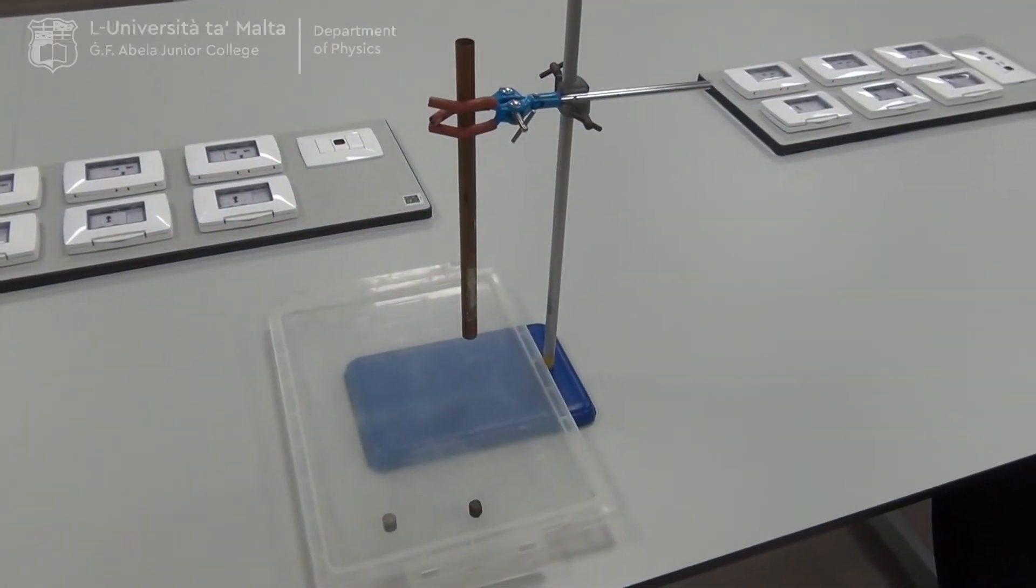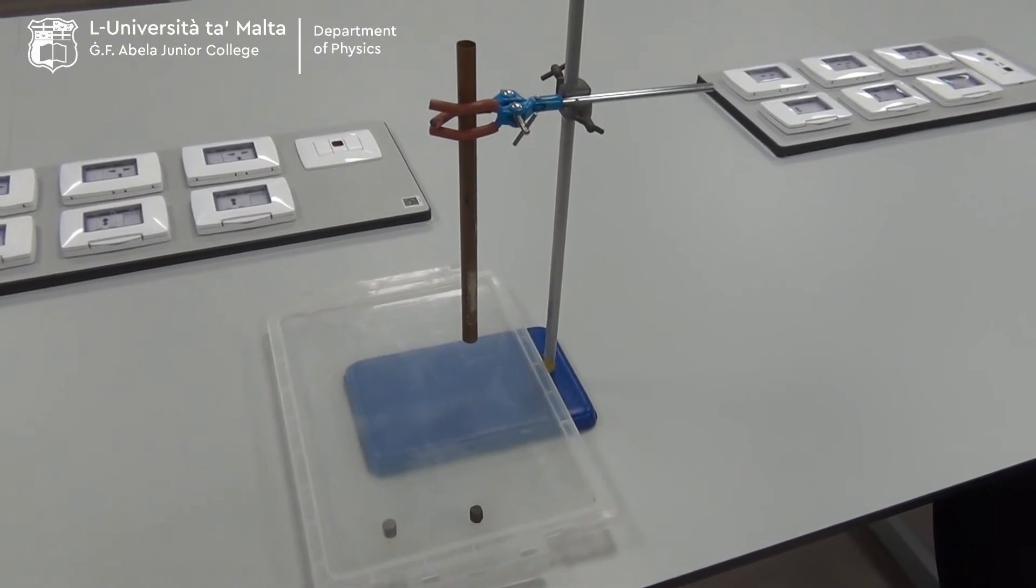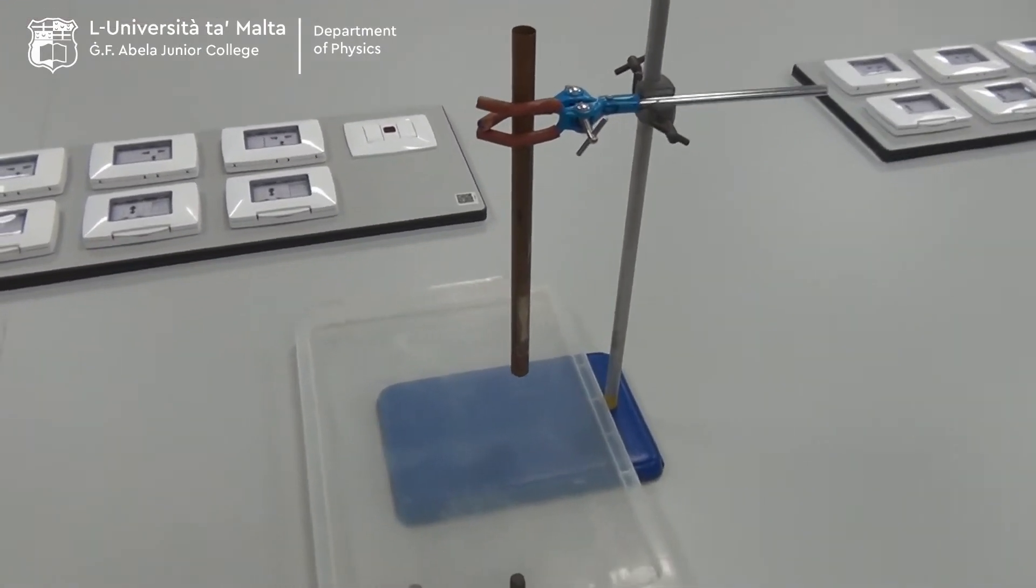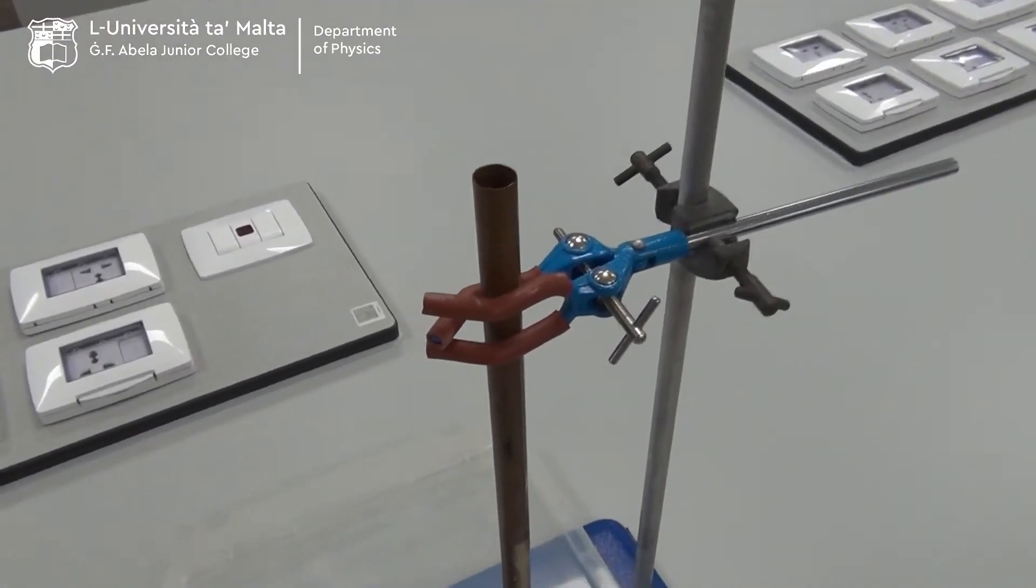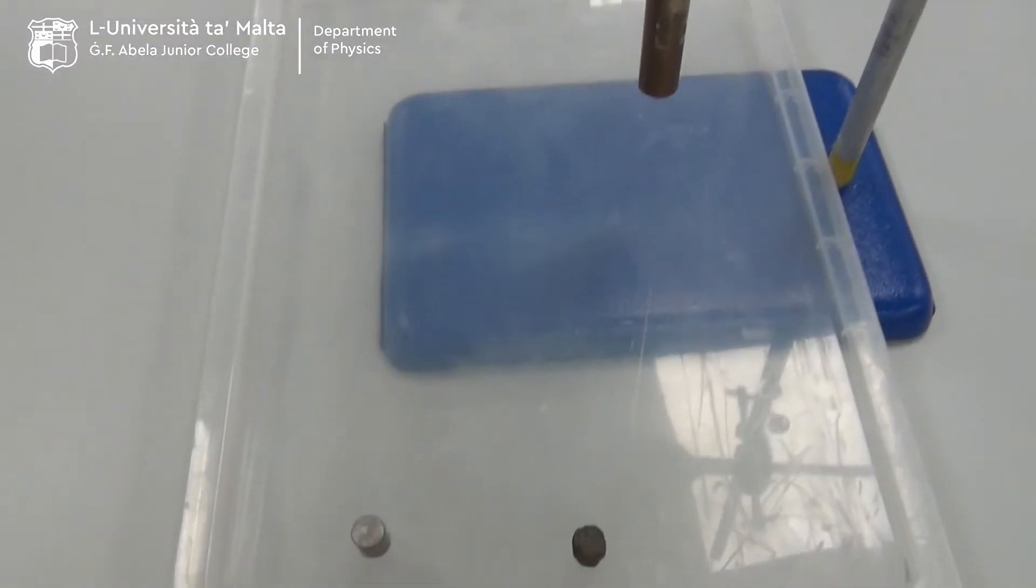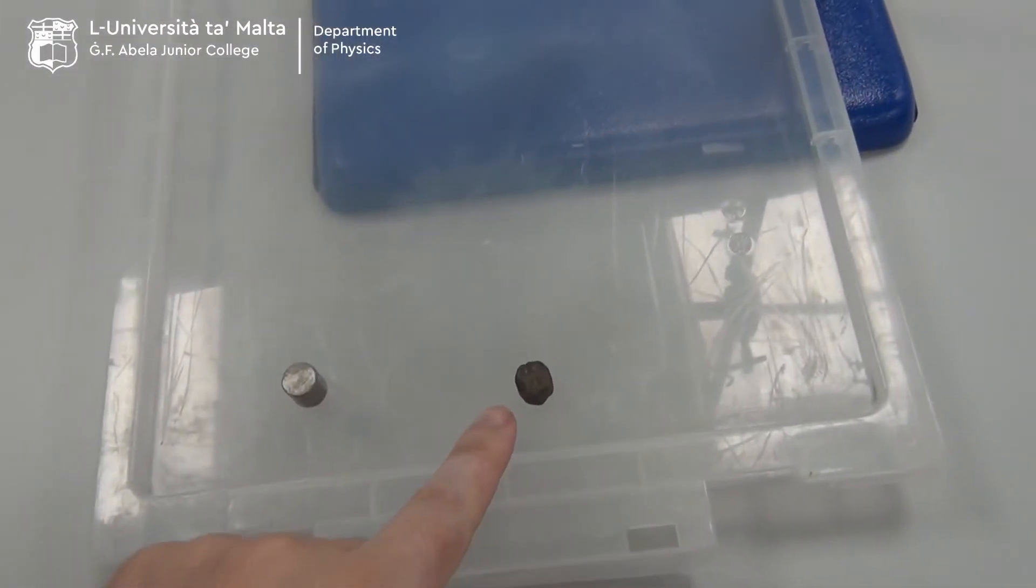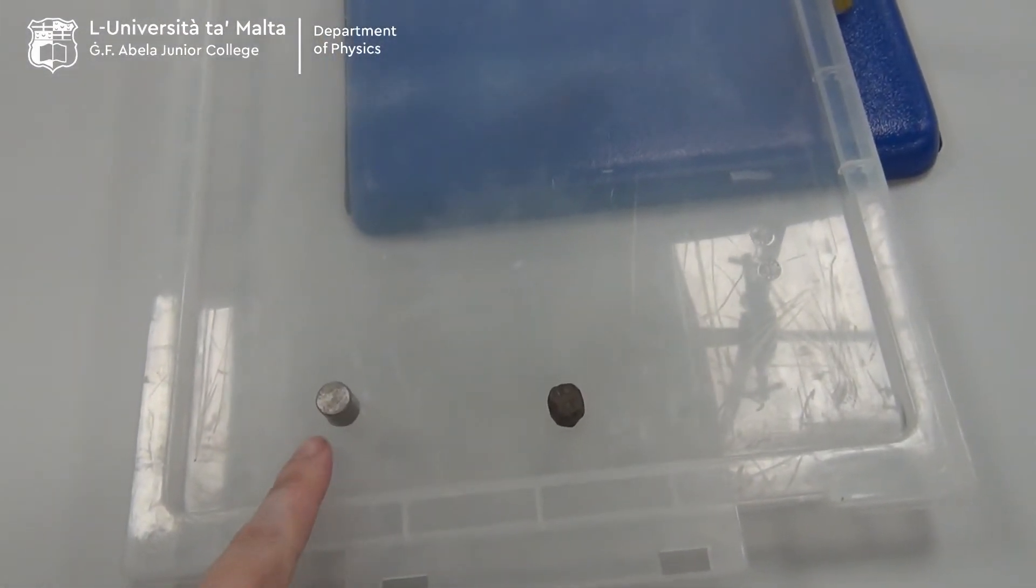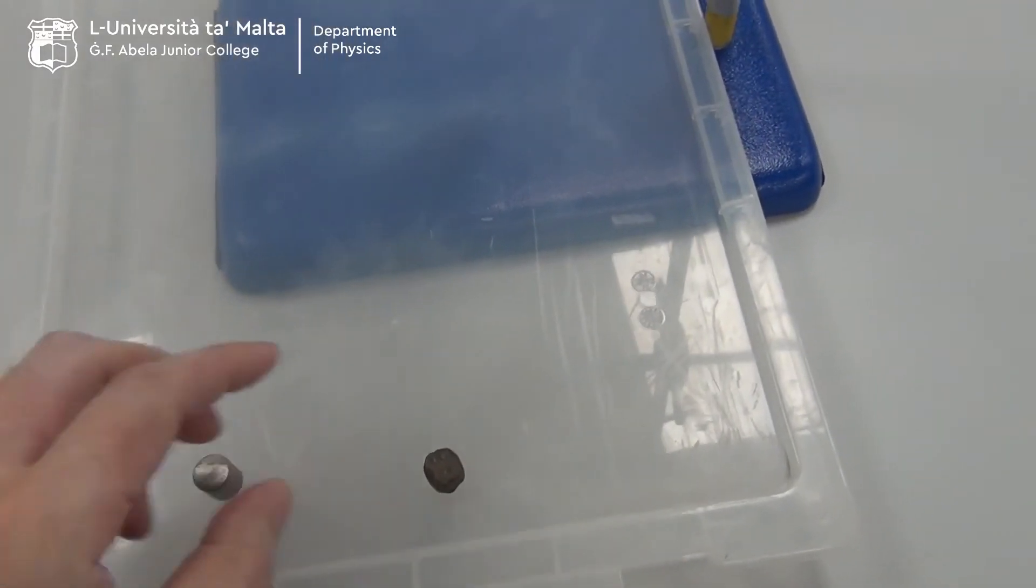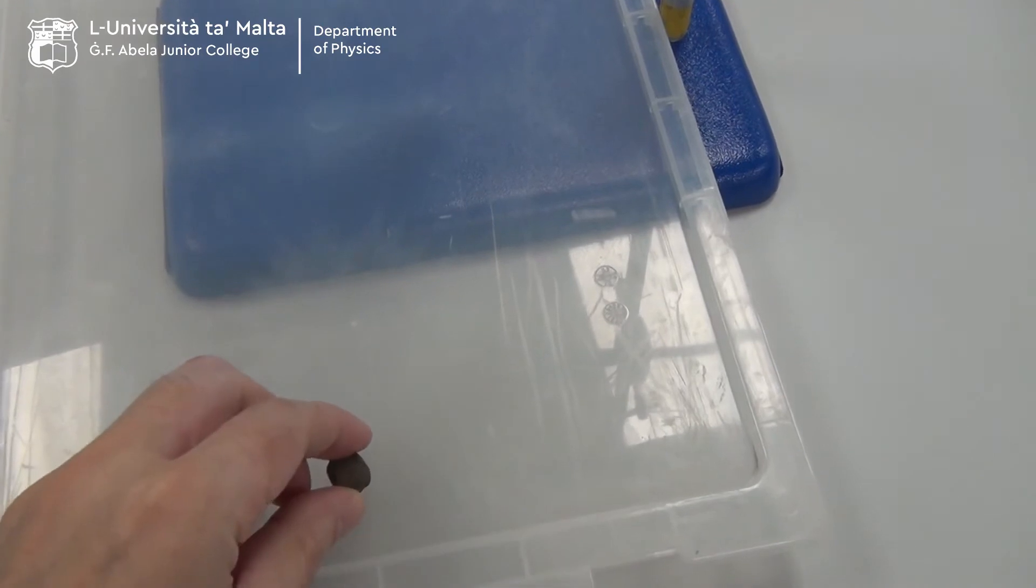This setup is used to demonstrate the laws of electromagnetism, namely Lenz's law and Faraday's law. For this setup we use a copper tube and a magnet which is here, and the same size piece of iron. They are cylindrical in shape, almost similar.